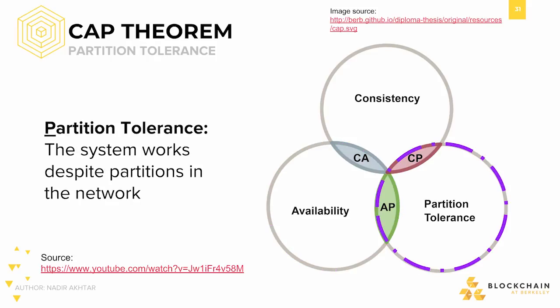Last but not least, the P in CAP stands for partition tolerance. A partition is an inability for two or more nodes in a network to communicate with each other. If node A cannot receive messages from node B and vice versa, there is a partition between the two. You can consider partitions to be the equivalent of unbounded network latency, meaning that messages will not get to their recipients. Partition tolerance is the ability to function in spite of partitions. It falls in line with safety, as it specifies what will not happen — that a network will not stop functioning, even with partitions.